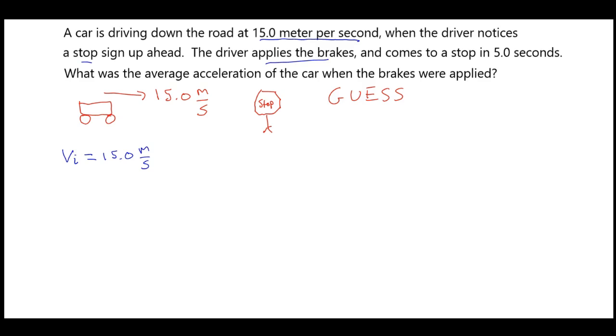Now, if I take a look at the problem, what it says is that the driver hits the brakes and comes to a stop. A stop means we are at rest. This means our final velocity is going to be 0 meters per second. The acceleration is what we are solving for, but we are told a time of 5.0 seconds.